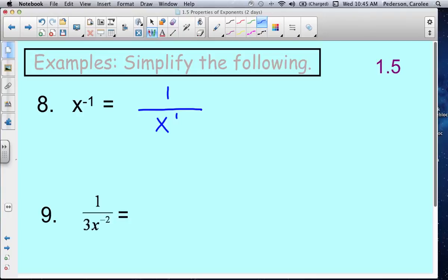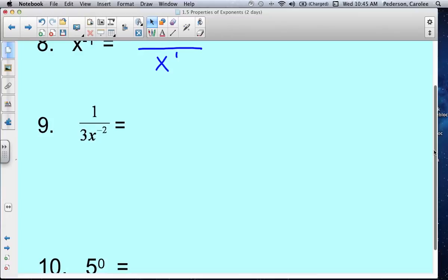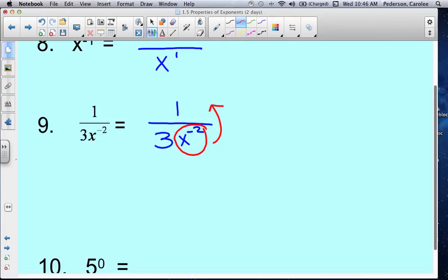Next example, number 9. The exponent is also a negative in the denominator, so now we do the opposite. We bring that denominator, x to the negative 2 power, up to the top. So this x to the negative 2 power piece is going to go up to the numerator and make it a positive x squared.